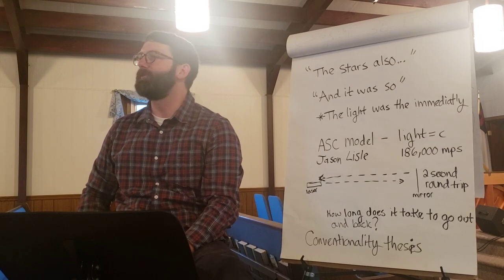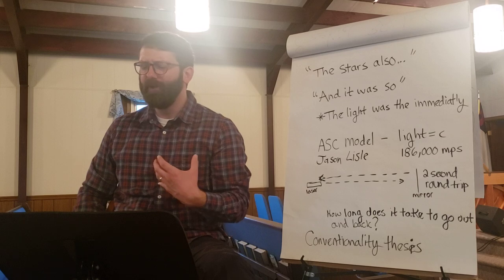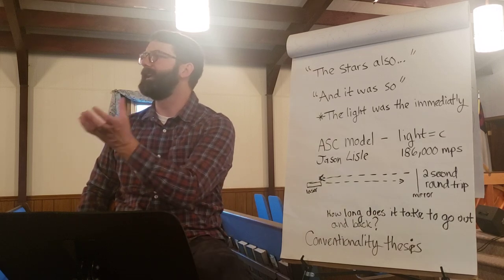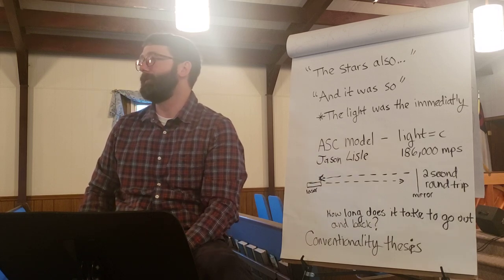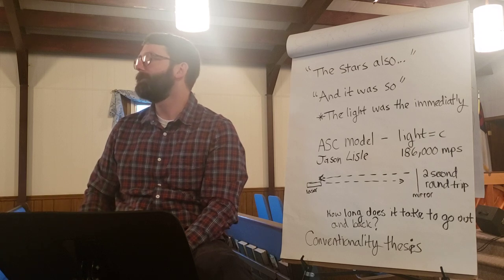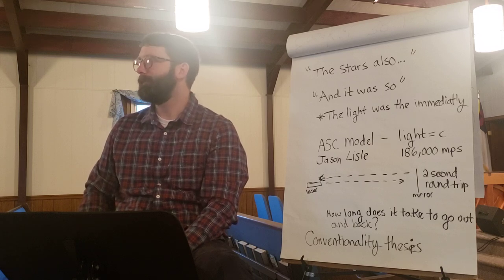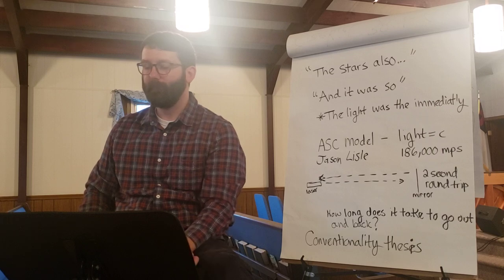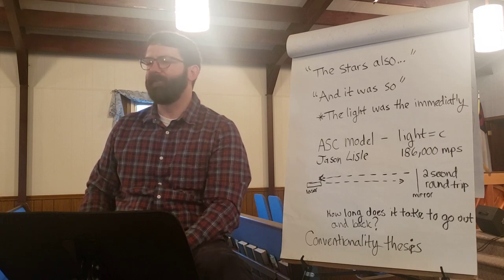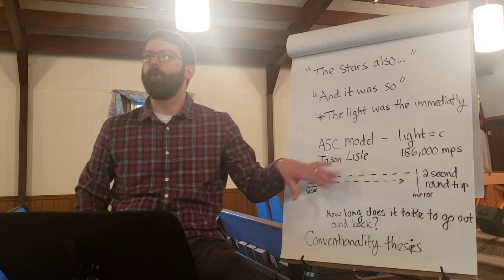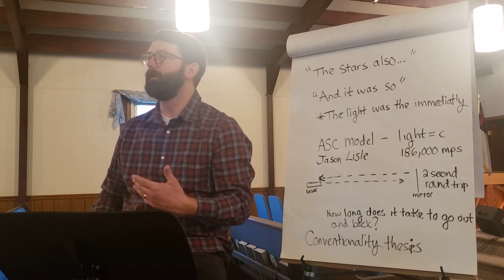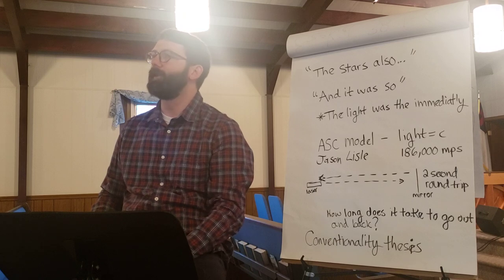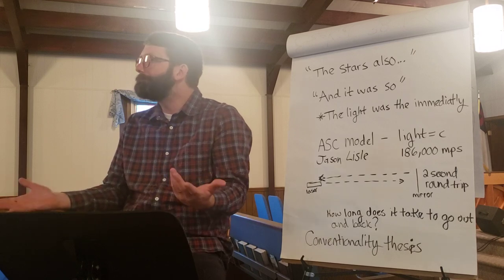186,000 miles per second. There have been different theories as far as how did the light get here so fast, because that's what Genesis says. But it could be that the most simple explanation is the best explanation. If you believe God created the heavens and the earth, it's not too far-fetched to believe that the light was there when he created it — he created the light and the stars at the same moment. God can raise the dead, the laws of physics weren't fixed yet, and it's very possible.